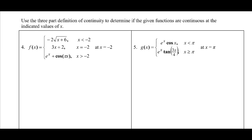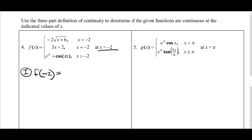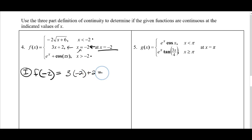Now we apply this analytically, where we can't see the graph. For number four: is the function continuous at x = −2? Part one: looking at the piecewise function, x = −2 is defined by the rule 3x + 2, so f(−2) = 3(−2) + 2 = −6 + 2 = −4. The function is defined. Part two: I need to analytically evaluate the left and right limits, since this is piecewise.